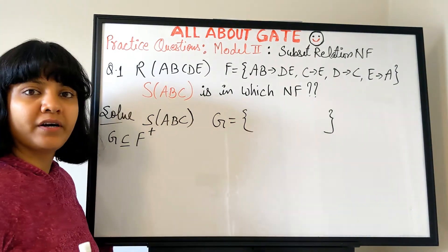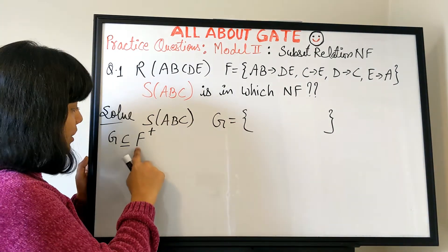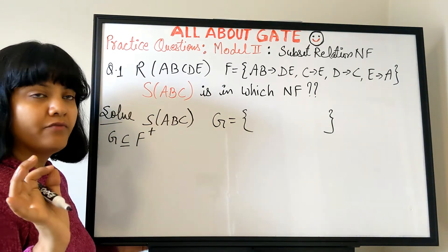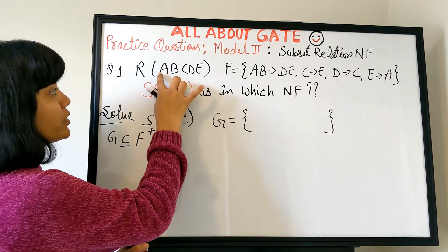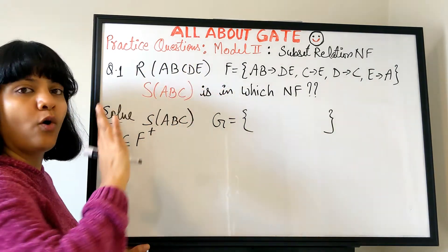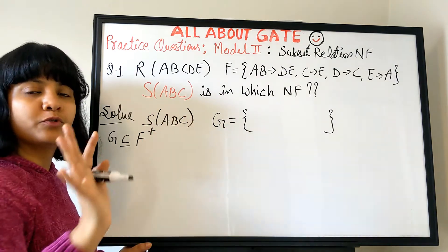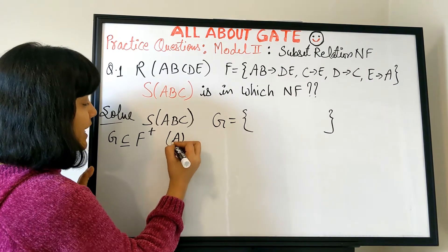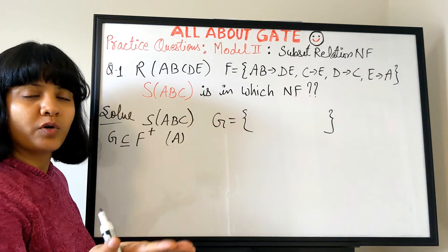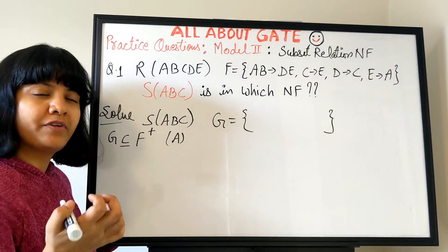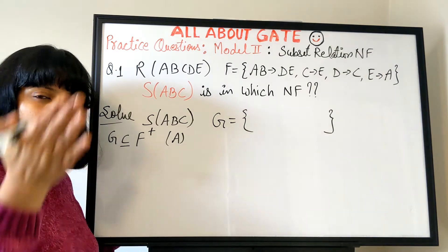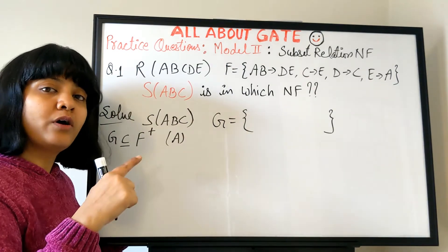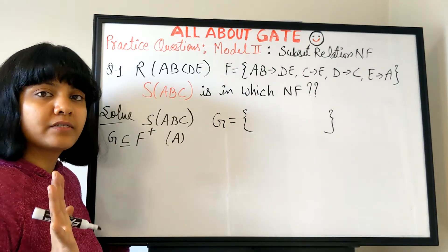So let's find F+ restricted to A, B, C only — not for all five attributes A, B, C, D, E. We take all subsets of the three attributes and find the closure of each. Everything together makes F+. If you have doubts you can check the F+ chapter in the playlist.